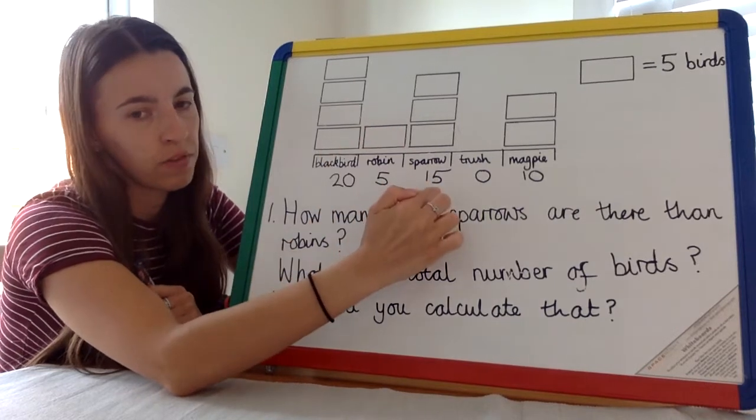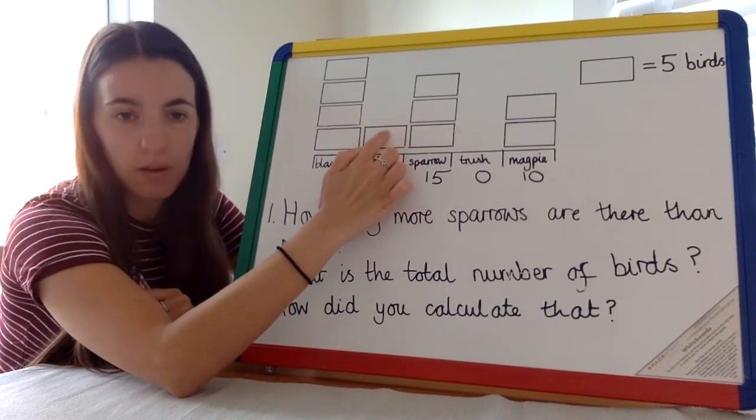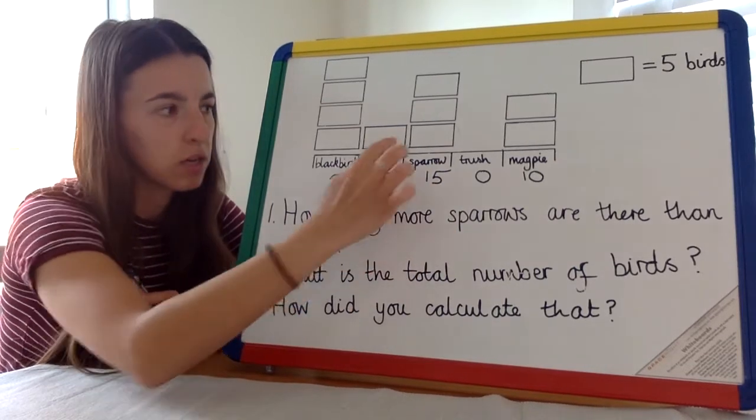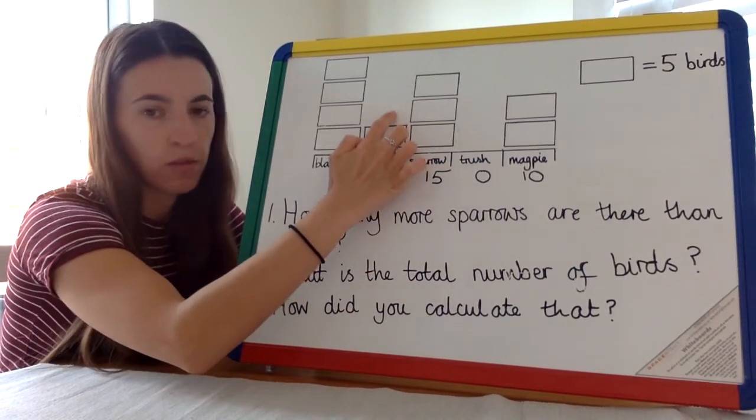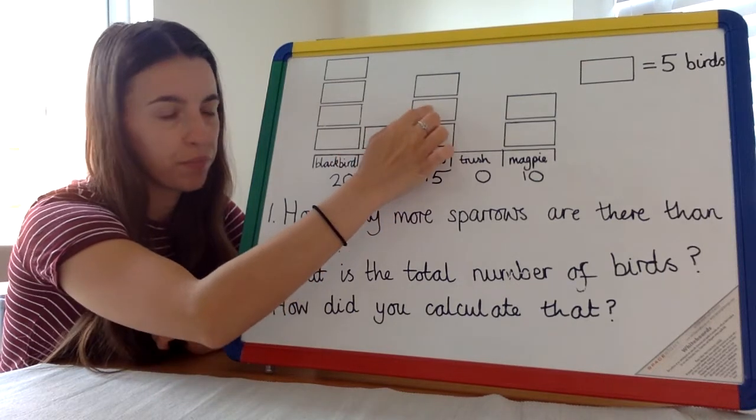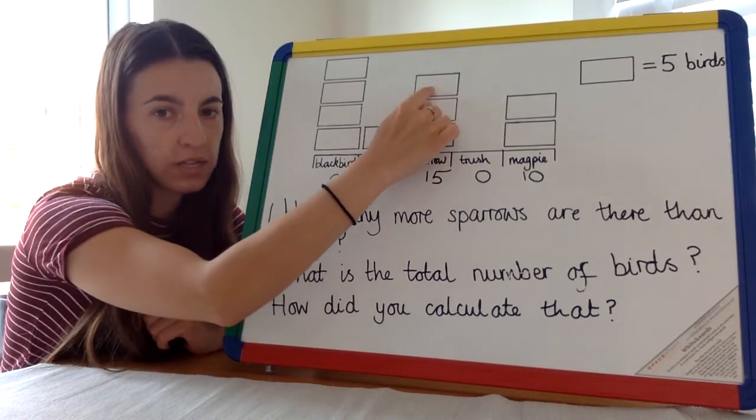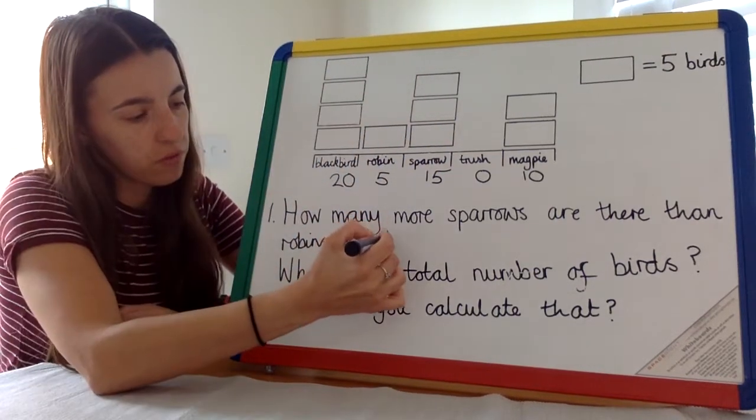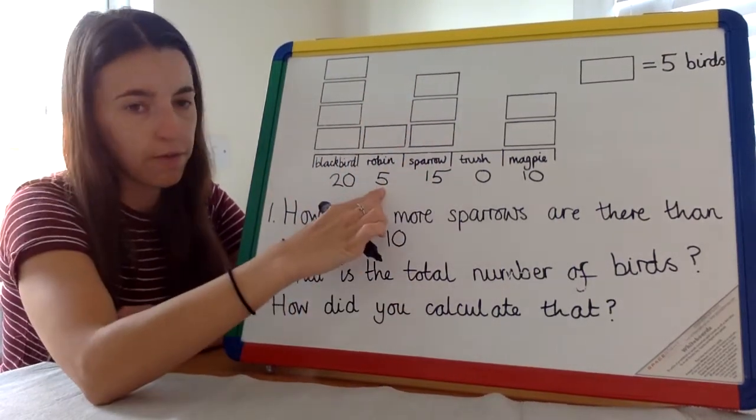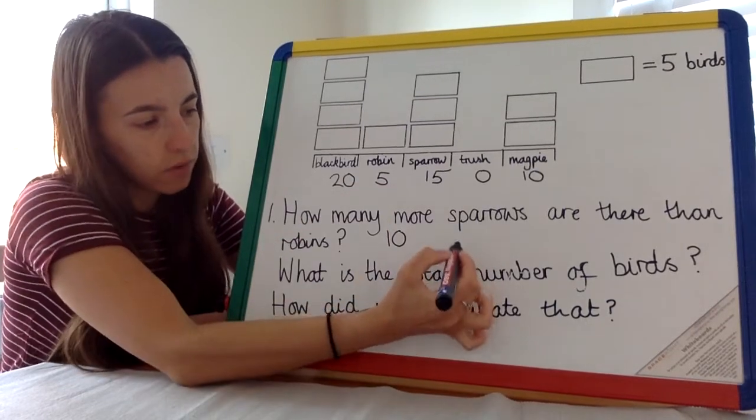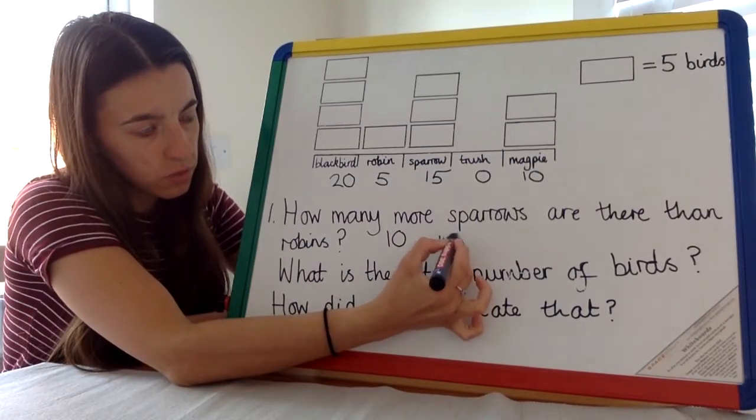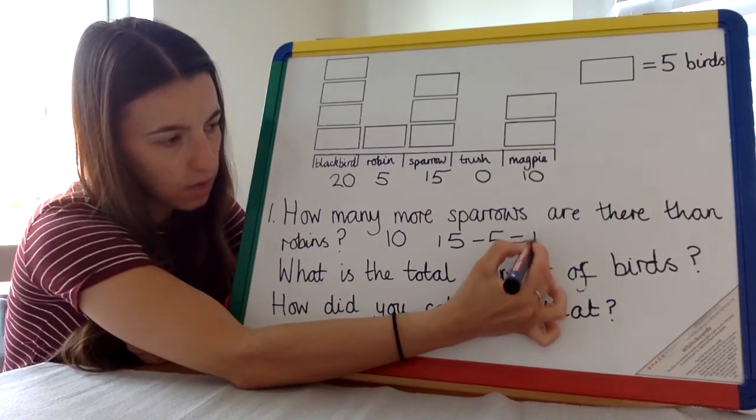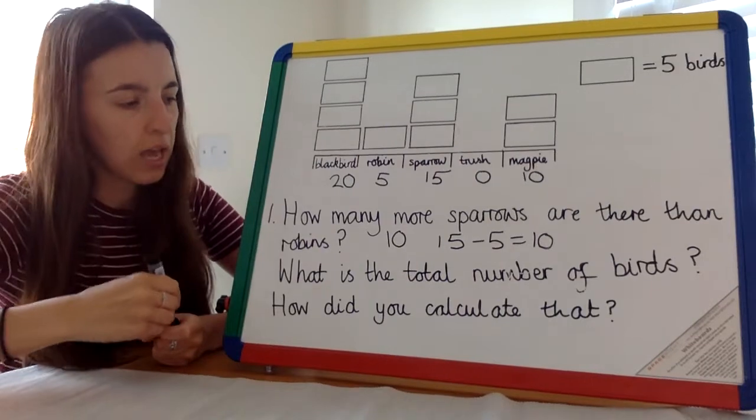We know that this is five and we know this is 15. So we're going to count in fives to see how many more sparrows there are than robins. They have five, so we're going to continue from here. Five, this one's five, ten. There are ten more. The difference between 15 and 5 is 10. We can write that as 15 take away 5 equals 10. There are 10 more sparrows than there are robins.